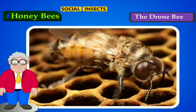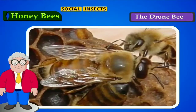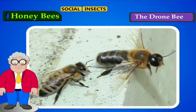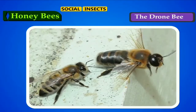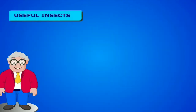Number 3: The drone bee. It is a stingless and defenseless bee. Its function is to mate with the queen. After mating, the drone dies immediately.